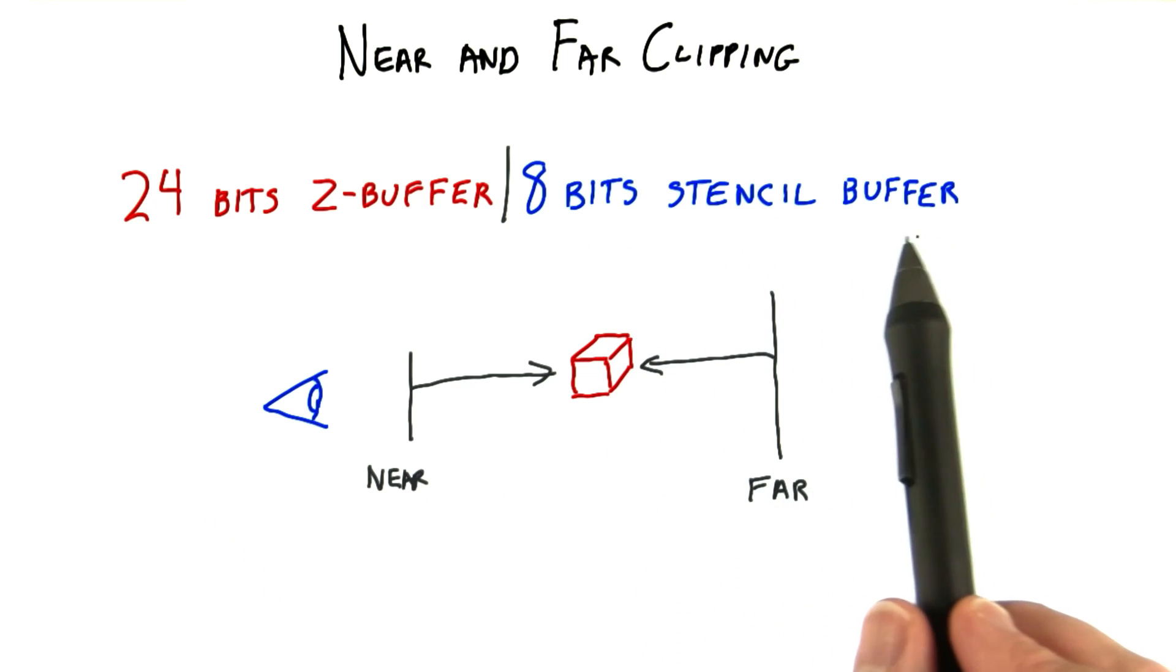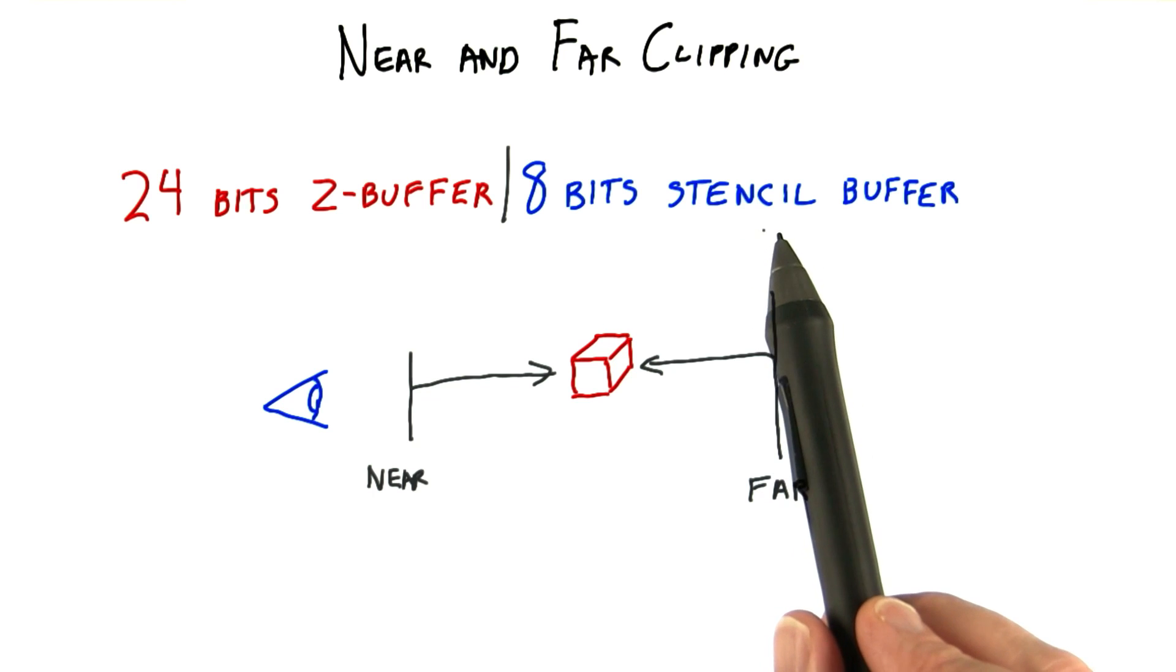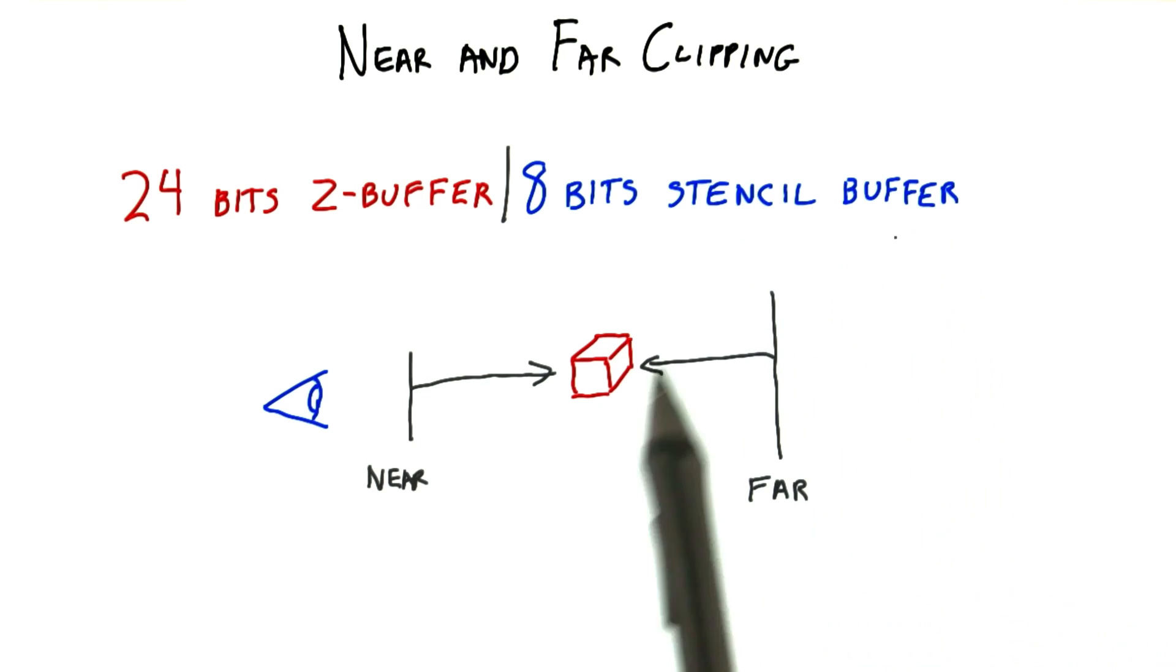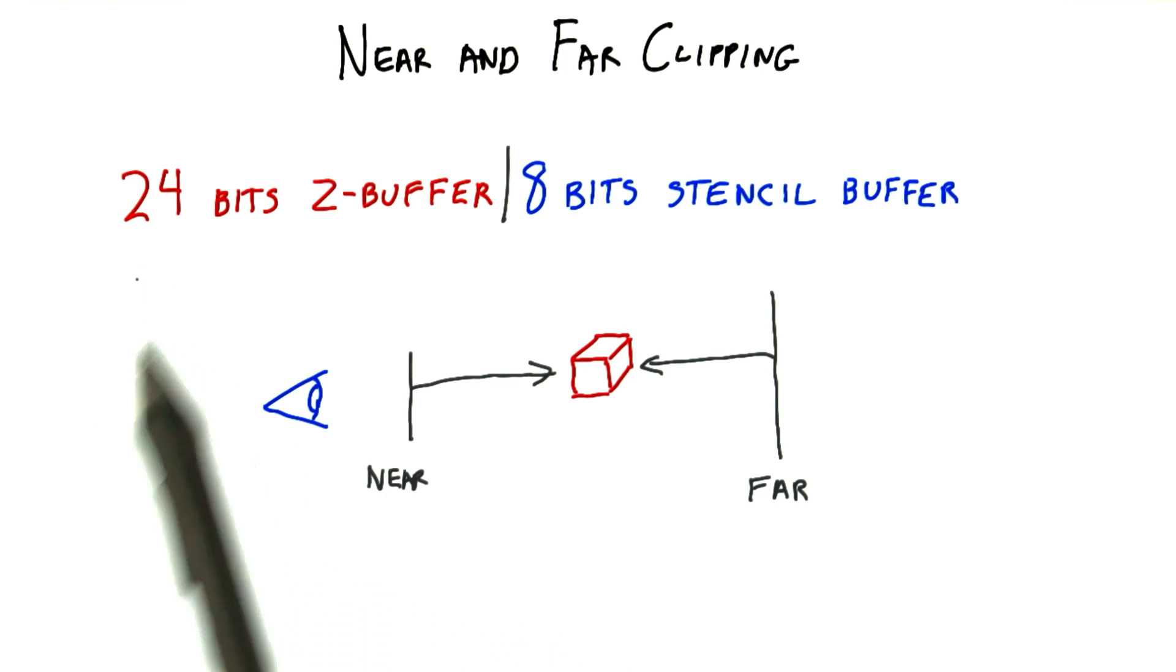This is a separate buffer I'm not going to talk about in this course, but that can be used for on-screen clipping and other effects. The z-buffer has lots of bits, but not an infinite number of them.